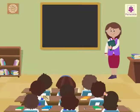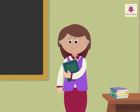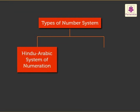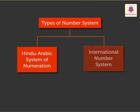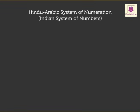Hello kids! We have already learned that there are two types of number systems: one, the Hindu-Arabic system of numeration, and two, the international number system. Today let us learn more about them. Let us begin with the Hindu-Arabic system of numeration.